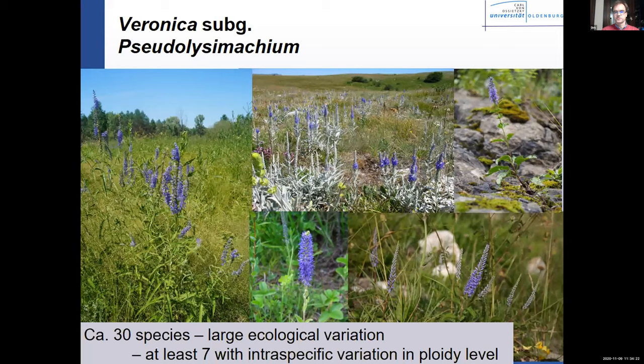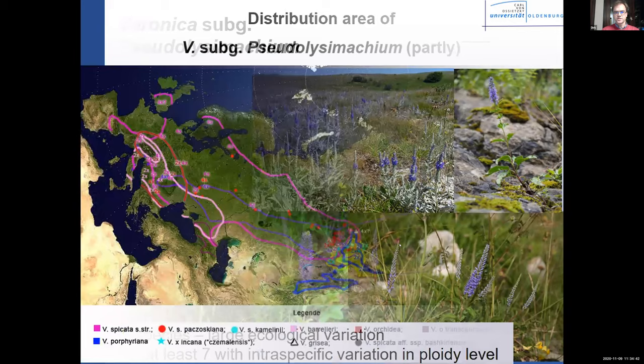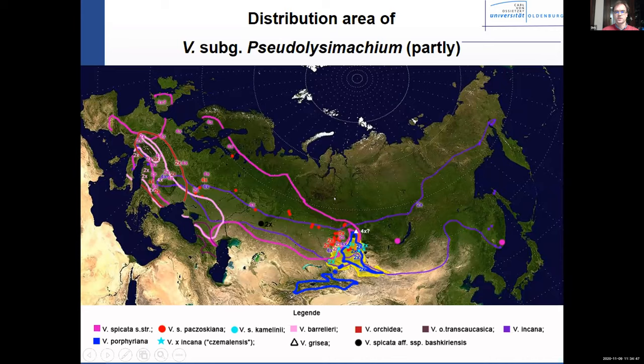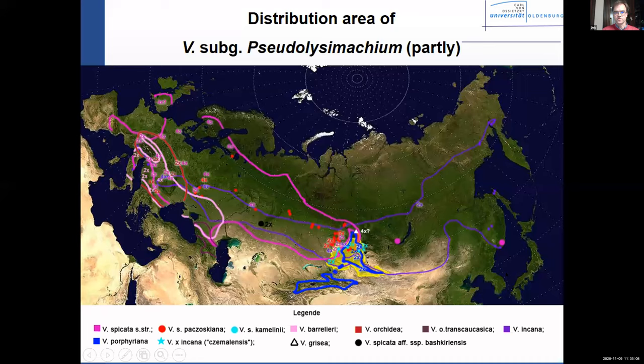What we are mostly interested in is the effect and consequences of polyploidy for the recolonization of Eurasia after the ice ages. The distribution area of this subgenus spans Eurasia; there are several species that are fairly widespread across the Eurasian area where apparently in the Pleistocene there were large static areas. I will tell you in three pieces what we have learned about hybridization and polyploidy in this group based on GBS data and some other data.